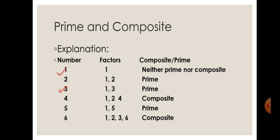Let's go to the next number, which is two. Two has two factors — the numbers which divide two are one and itself. So it is a prime number according to the definition, because a prime number must have exactly two different factors.